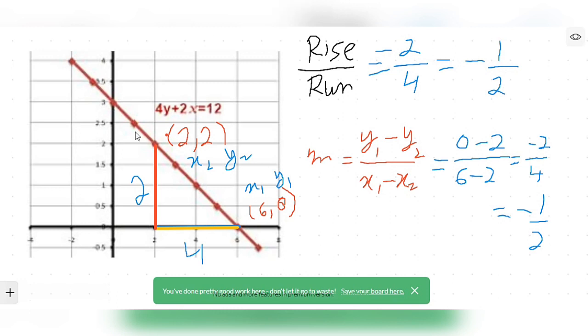Now you can use the second formula to find the gradient that is y1 minus y2 over x1 minus x2. In these coordinates this is x1, this is y1, this is x2 and this is y2. I just plug in the values in this formula and after simplification I got the same gradient.